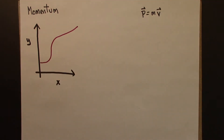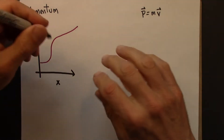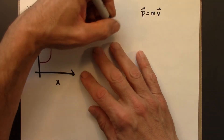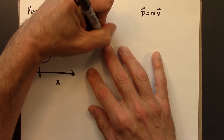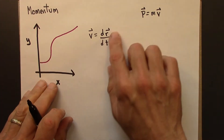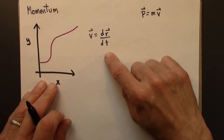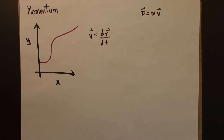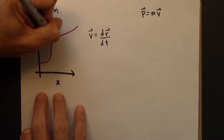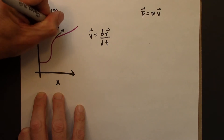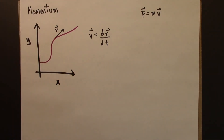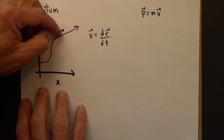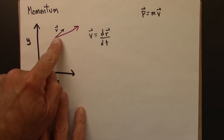A couple of ways to picture it. Velocity is defined to be displacement divided by time. Usually we think about distance over time, but now we're going to think about this as a vector quantity. We can picture the velocity as your speed at a particular moment — the direction you're headed, which is parallel to this curve, tangent to it. The magnitude of this arrow is the speed at that particular moment.